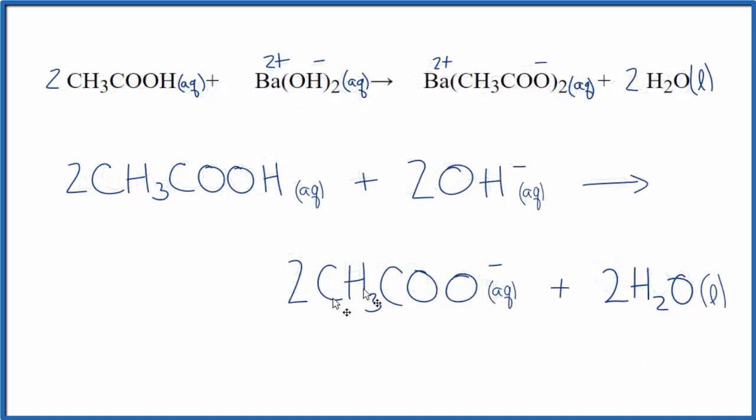One last thing. Since we have two in front of each term here, we could reduce that down to just a one. And we wouldn't really write the one. So this would be a more concise net ionic equation for CH3COOH plus Ba(OH)2. This is Dr. B, and thanks for watching.